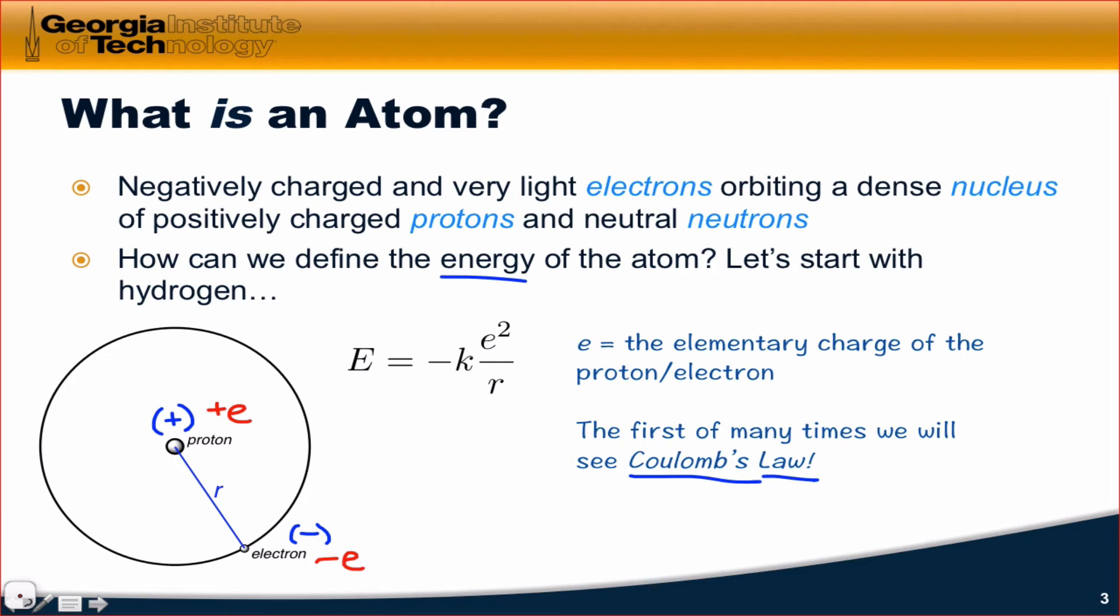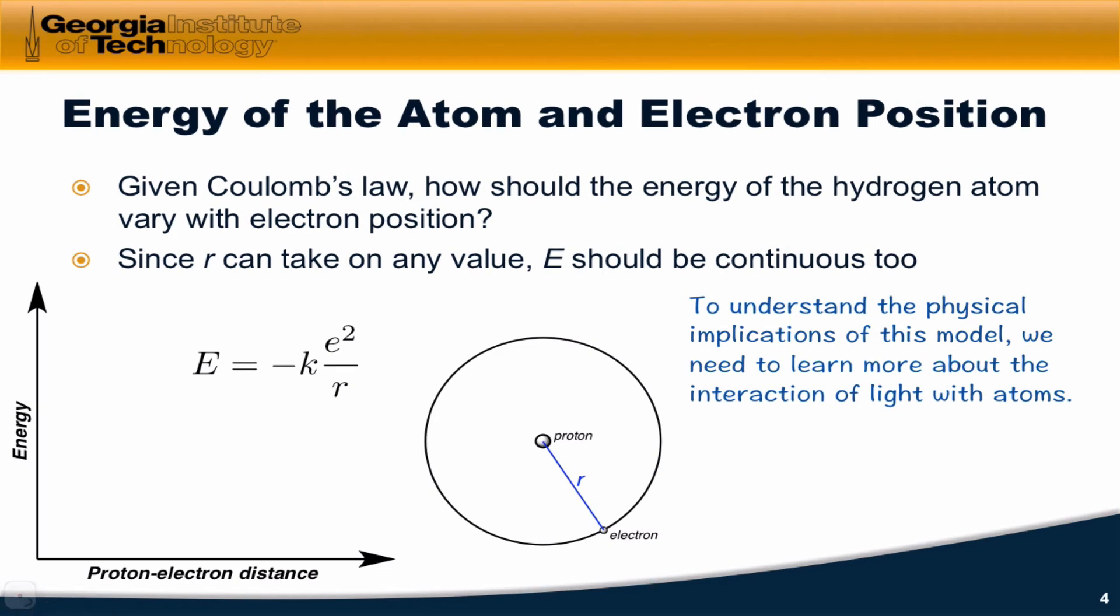Make sure you understand the origin of this negative sign as arising from the product of positive e and negative e. Given Coulomb's law, how should the energy of the hydrogen atom vary with the position of the electron?